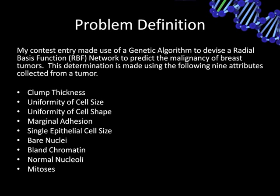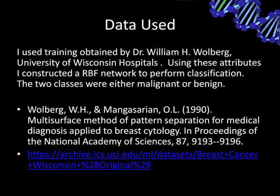The problem definition was to use a genetically trained radial basis function neural network to predict malignancy or benignness of breast tumors. I used data available from the machine learning repository of UCI, originally obtained by Dr. William Wolberg of the University of Wisconsin Hospitals. The purpose of my program was to demonstrate that the parallel class of C# could be used to train such a neural network using a genetic algorithm in a highly parallelized fashion using a multiprocessor computer.